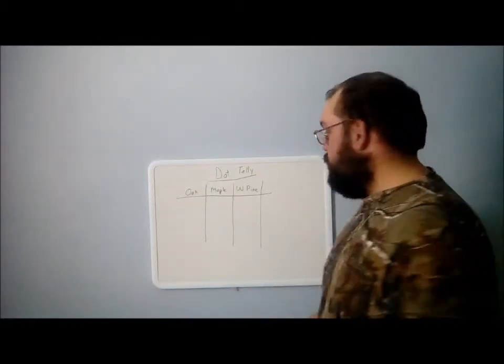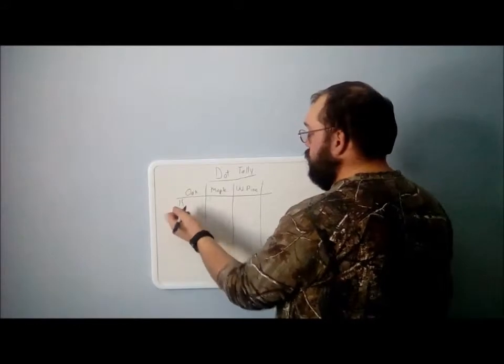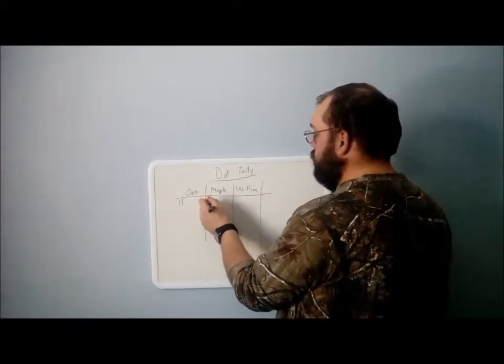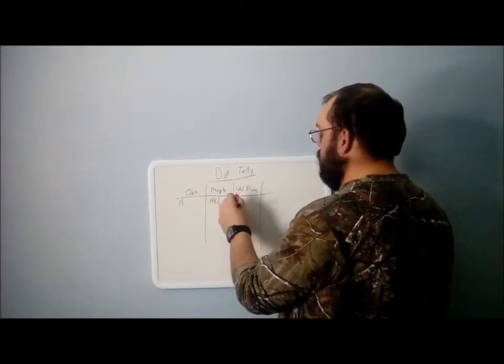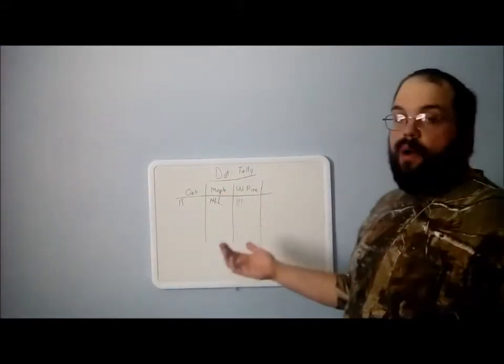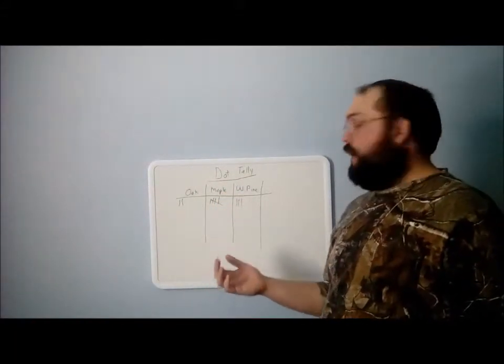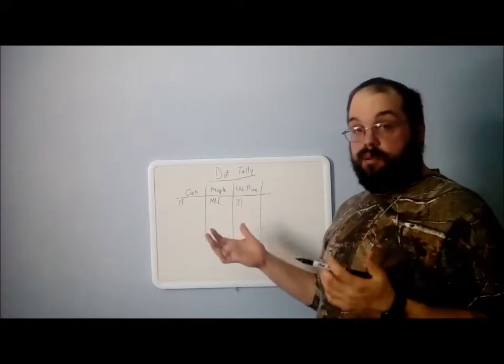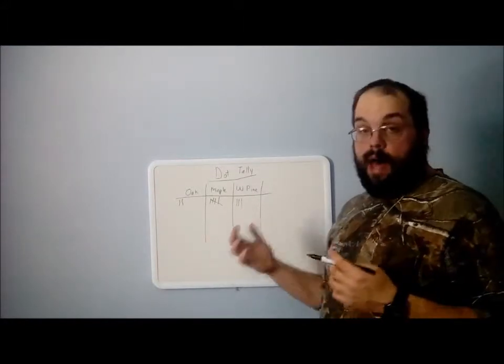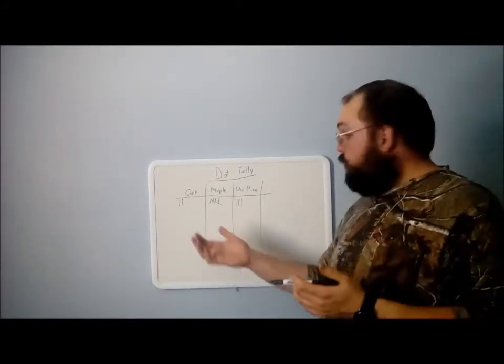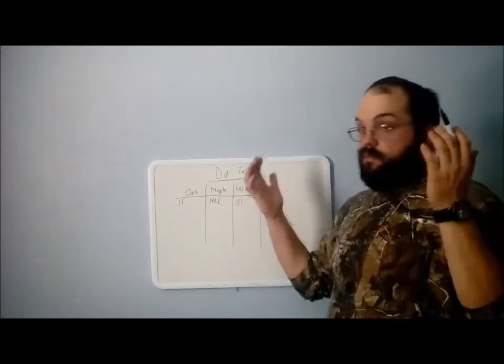Now normally you think well we'll just do this. So I got two oaks, one, two, three, four, five maple, and say four, three white pine. That works but that gets, that could get real messy if you have a big piece of property or say you got twenty, thirty oak trees that you're counting, which is very possible.